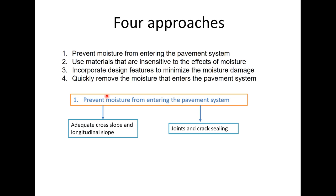Now in the first approach adequate cross slope and longitudinal slope is provided and this is the most effective means of minimizing the surface infiltration. Another common approach to limit the surface water in the pavement is to seal the joints and cracks and other discontinuities.